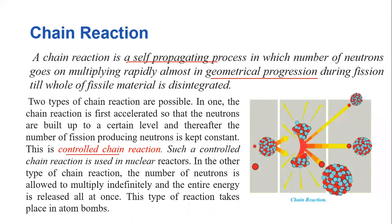Now, we talk about a controlled chain reaction. The neutrons are built up to a certain level, and thereafter the number of fission-producing neutrons is kept constant. If fission is not controlled, the neutrons will multiply. That multiplication is controlled — that kind of reaction is called a controlled chain reaction. Such a controlled chain reaction is used in nuclear reactors.